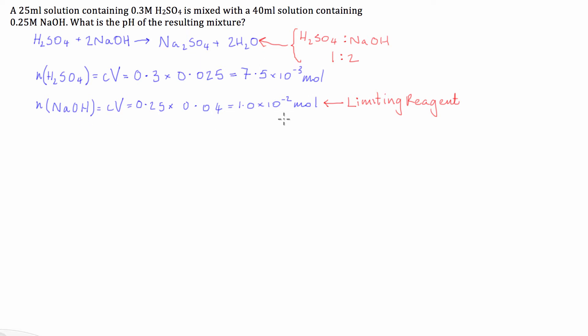So what we can do then is from our limiting reagent we can then figure out how many moles of this sulfuric acid is going to be consumed. So if we have 1.0 times 10 to the negative 2 moles of sodium hydroxide it's going to, using our ratio here,